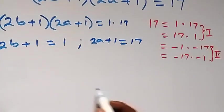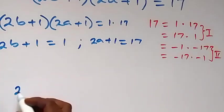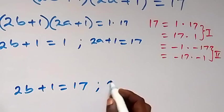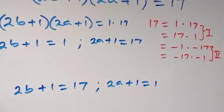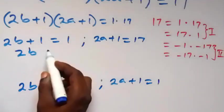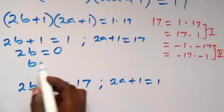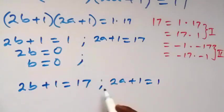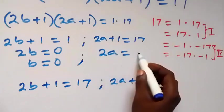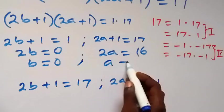And also the second part of case 1, which is 17 times 1, it implies that 2b plus 1 will then be equal to 17 and 2a plus 1 will then be equal to 1. Solving on this side, we have 2b equals to 1 minus 1 which is 0, dividing by 2 we have b equals to 0. And on this side, 17 minus 1 is 16, so we have 2a equals to 16, then dividing both sides by 2, we have a equals to 8.